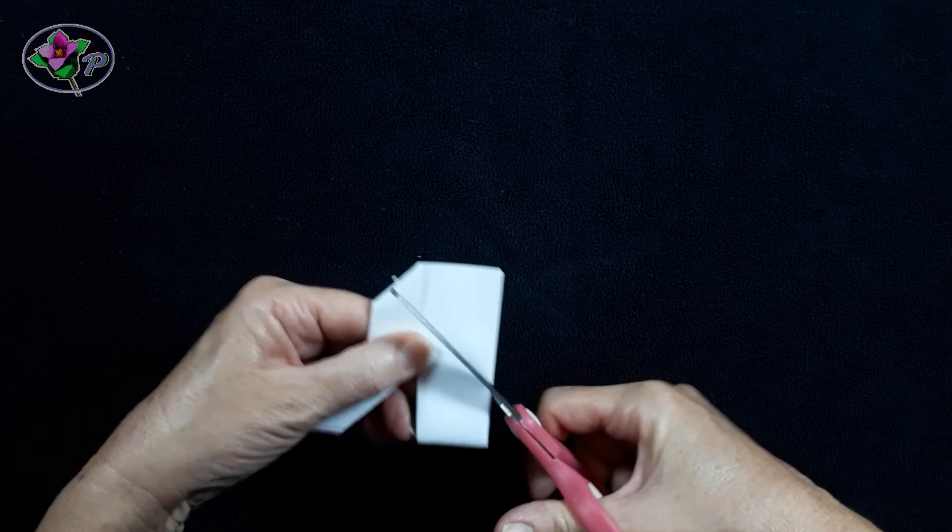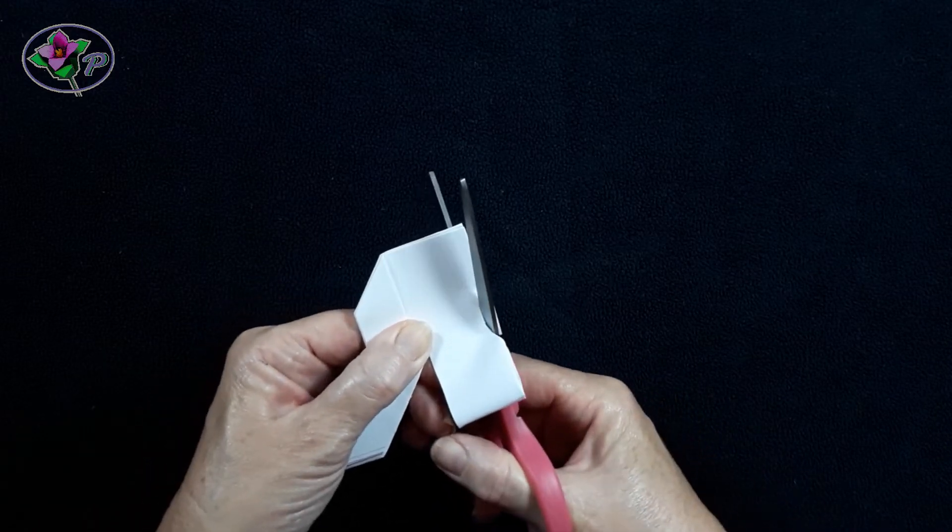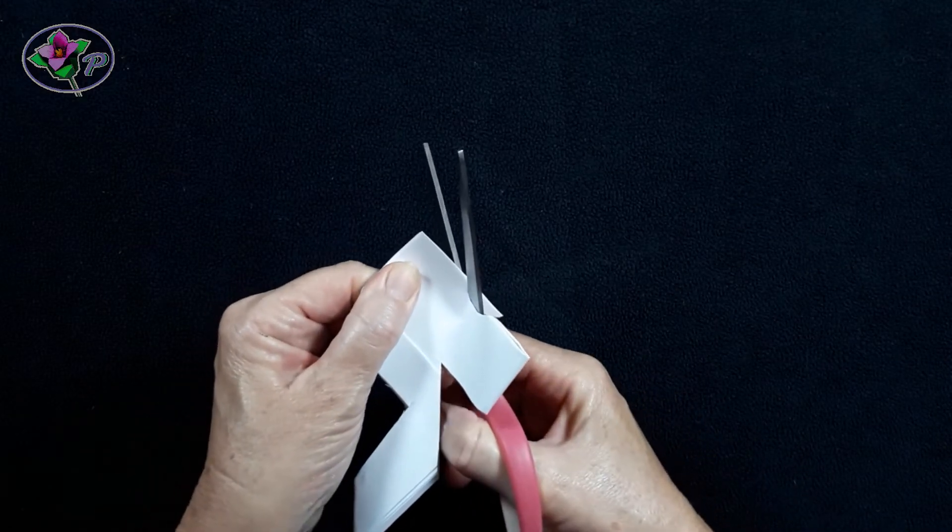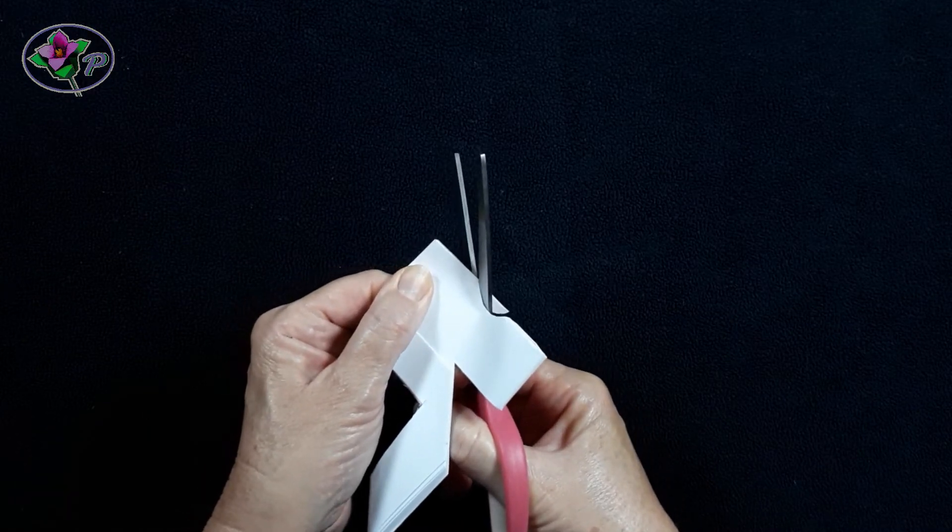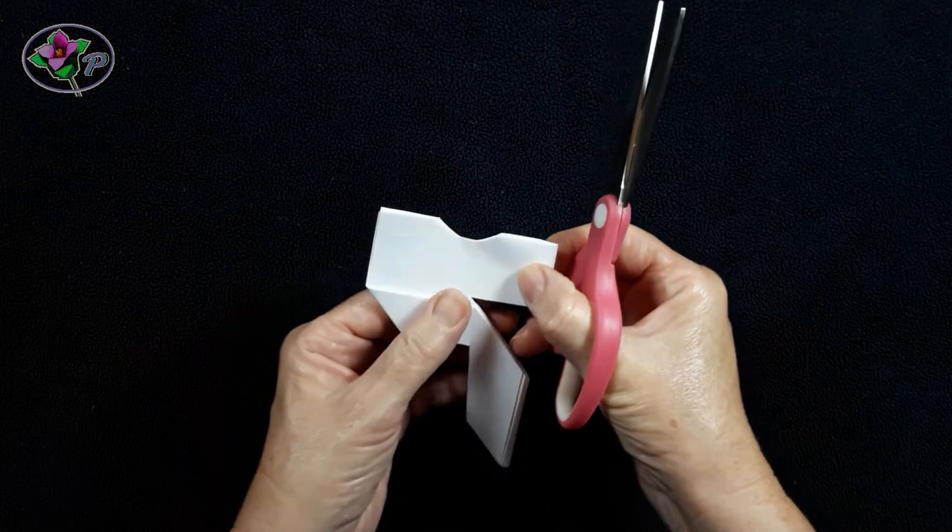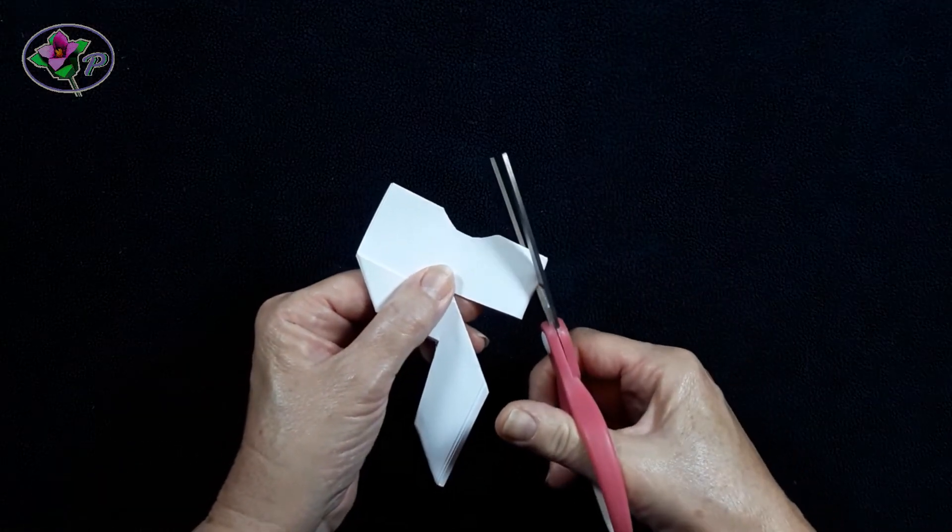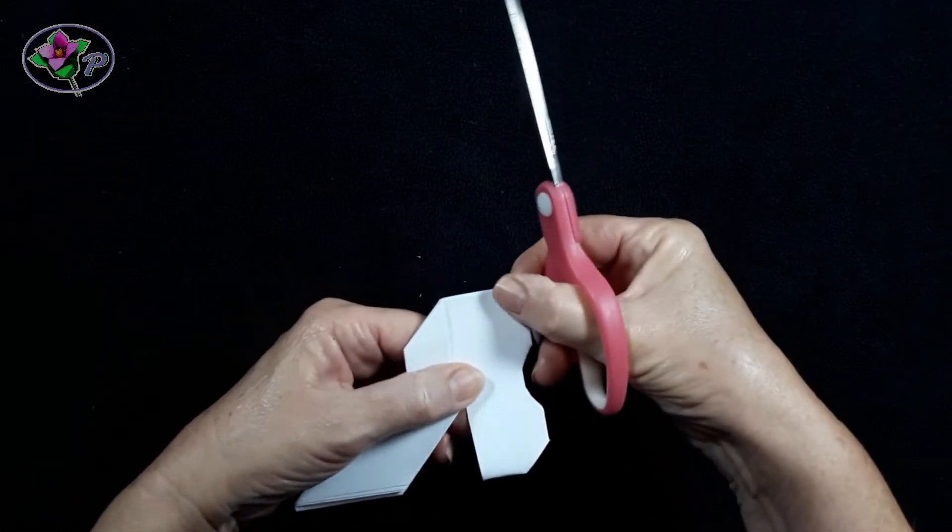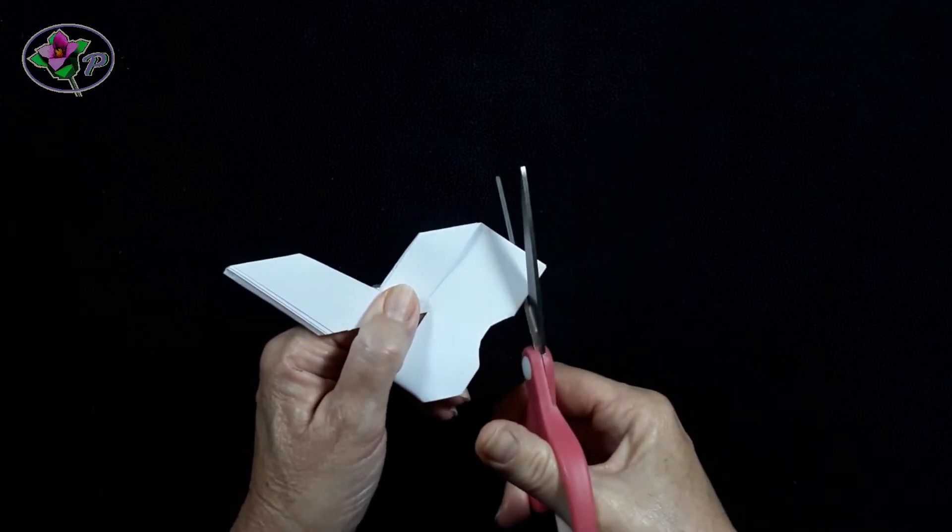Step 8. Cut one half a circle like so. Then clip the corners. You might think these cuts are simple but you'll be amazed when you open it.